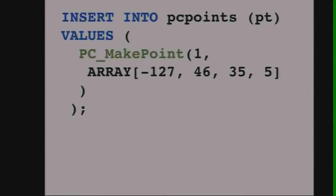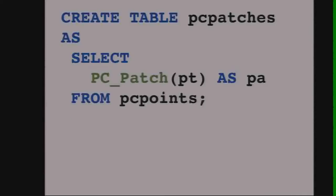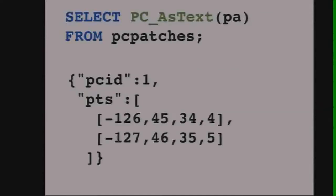If we add one more point to our points table, now we have a table with two points, and we can make an aggregate. We add the second point and then use the PCPatch function — an aggregate function that aggregates our two points into a single new patch in a new PCPatches table. Then we can pull that one patch back out and see what the text representation is.